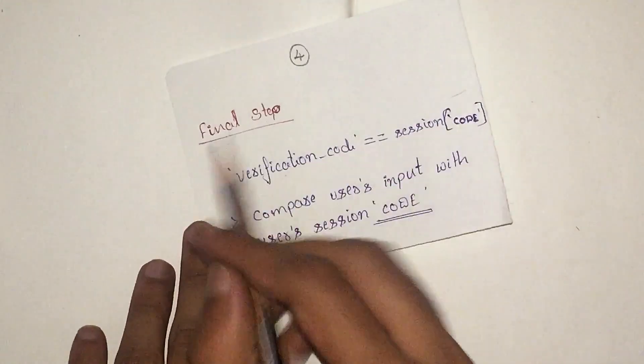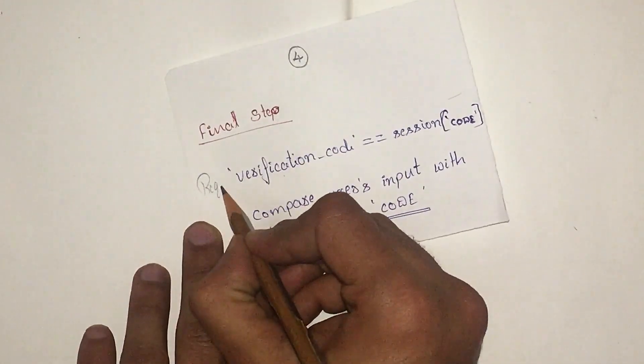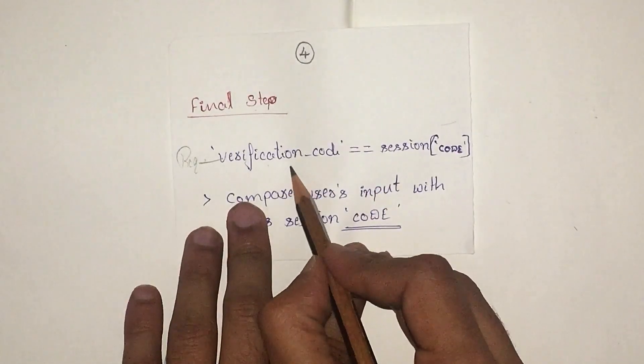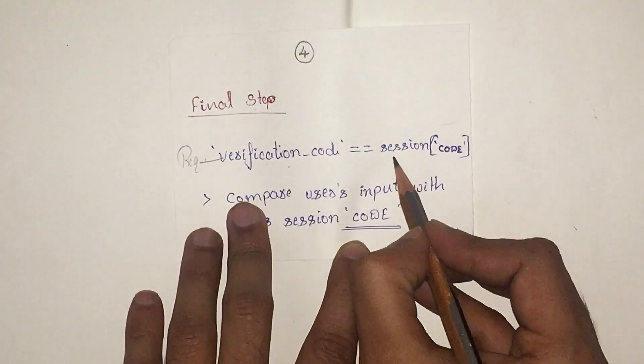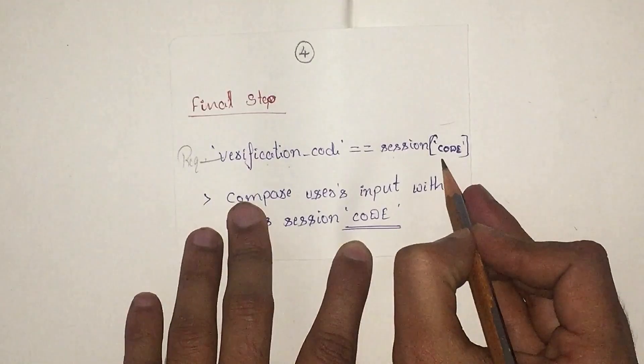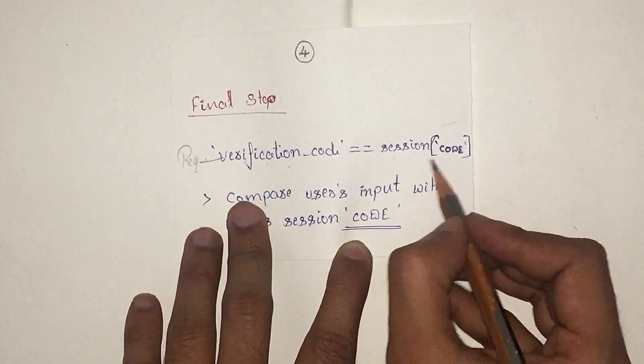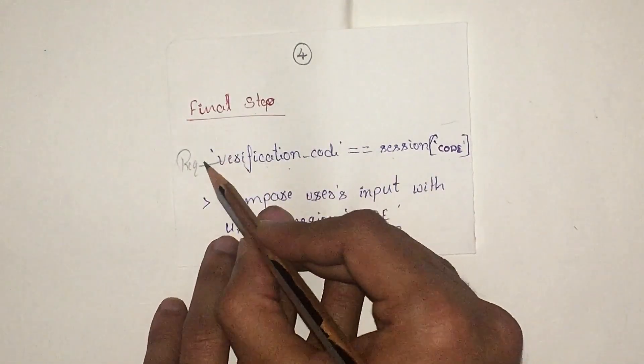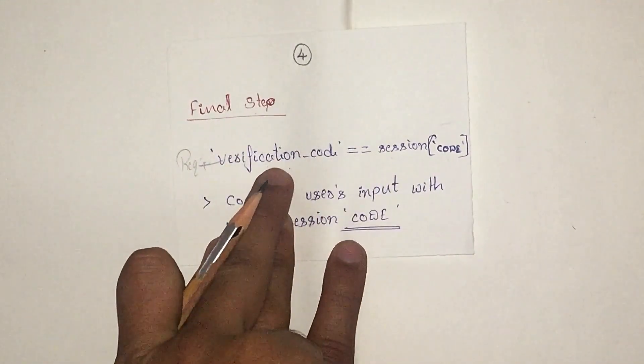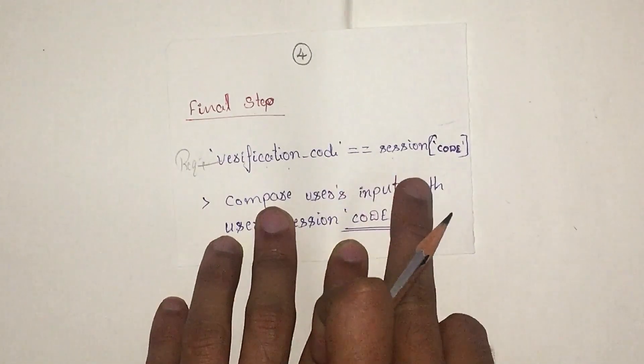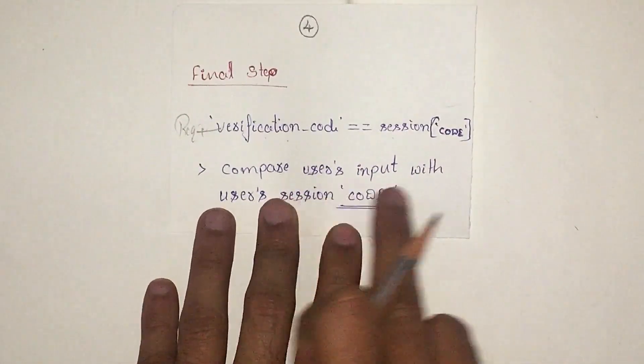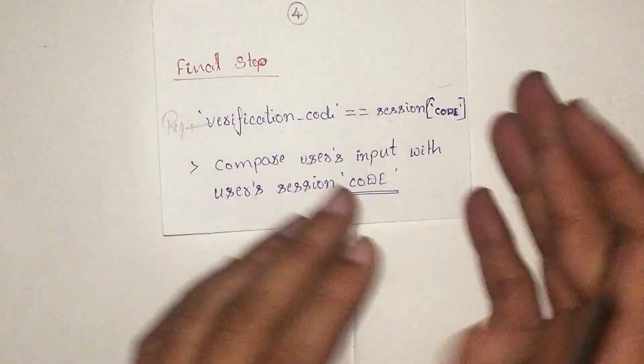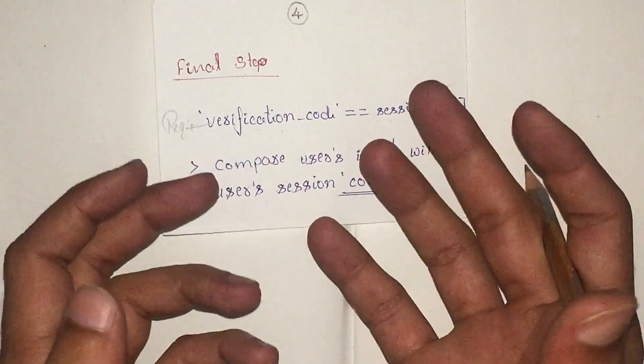From user request, I am going to collect this code and compare it to the session server-side code that I stored before sending to the client. I will cross-verify: if the user's entered code equals the session code, then if it works, we should allow him to log into the page or whatever web application you have built.